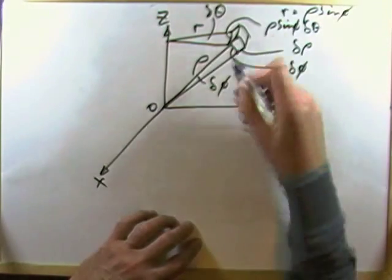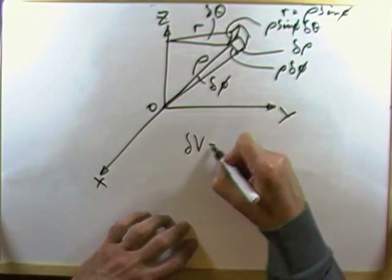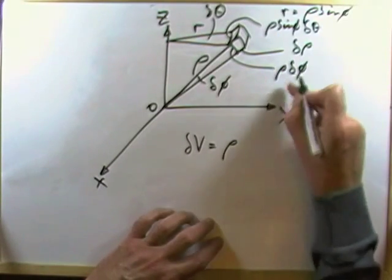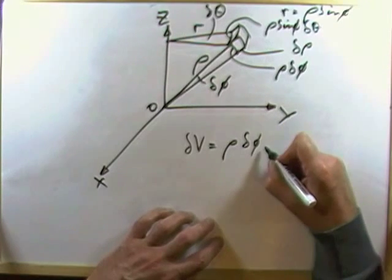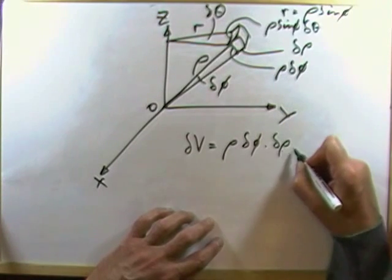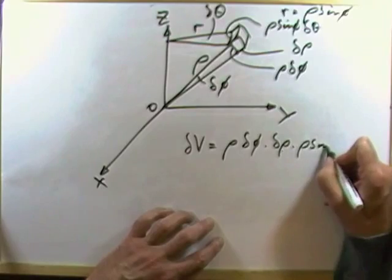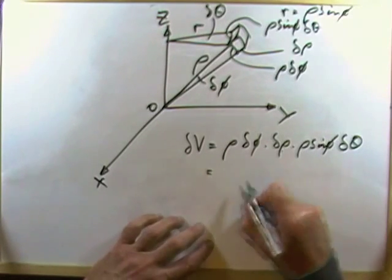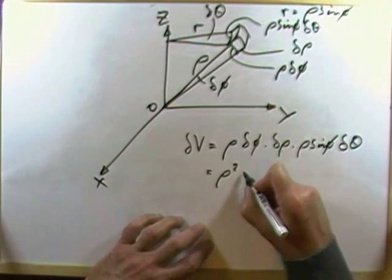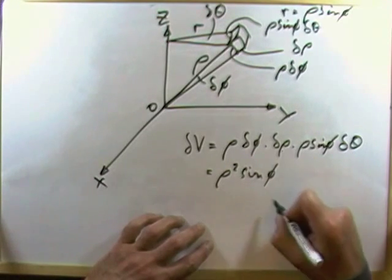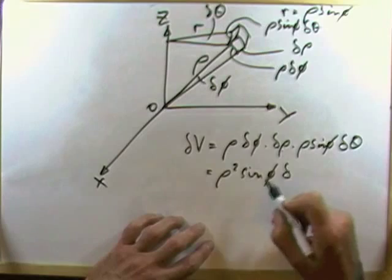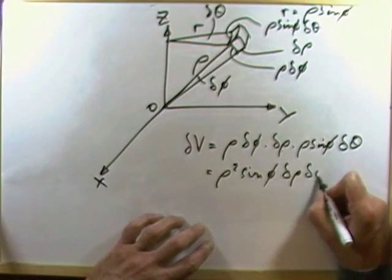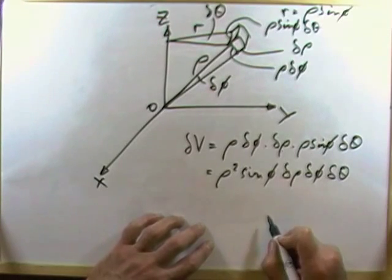Which means the length of that little arc is going to be rho sine phi delta theta. Then putting the three things together to get that little volume element. The little volume element will be made up of the length times the breadth times the height. So I've got rho delta phi times delta rho times rho sine phi delta theta. Putting it in order, that would be rho squared sine phi.